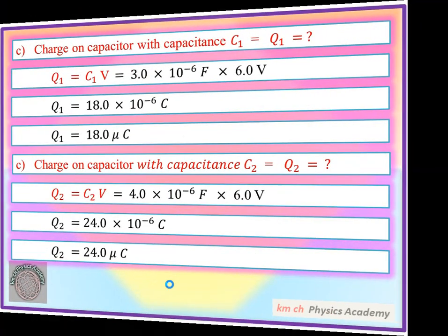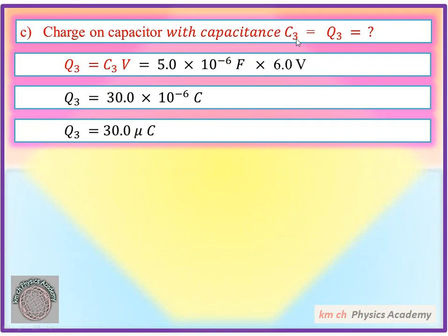تیسرے capacitor کے لیے: charge on capacitor with capacitance C3 کو Q3 رکھتے ہیں۔ Q3 = C3 × V۔ C3 = 5.0 × 10⁻⁶ F اور V = 6.0 V۔ Farad = C/V ہوتا ہے تو V cancel ہو جائے گا، unit coulomb آئے گا۔ 5 کو 6 سے multiply کریں تو 30 بن جائے گا۔ Q3 = 30.0 × 10⁻⁶ C = 30.0 microcoulomb۔